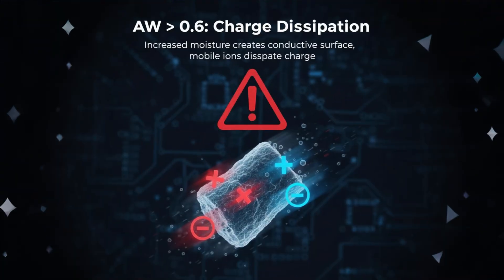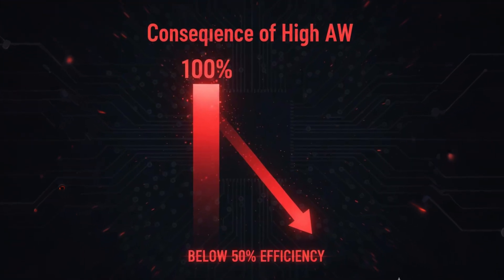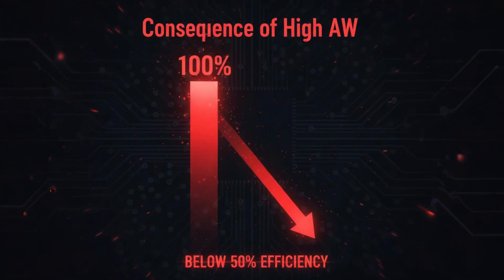However, deviations from this optimal AW lead to reduced performance. Above 0.6 AW, increased moisture creates a more conductive surface layer, often incorporating mobile ions, which dissipates charge rapidly. Consequently, particles may initially charge but lose the electrical potential before entering the electrical field, leading to separation efficiency dropping below 50 percent. This effect is compounded by ambient humidity, as noted in episode 8, where moisture deposition can further elevate AW during processing.